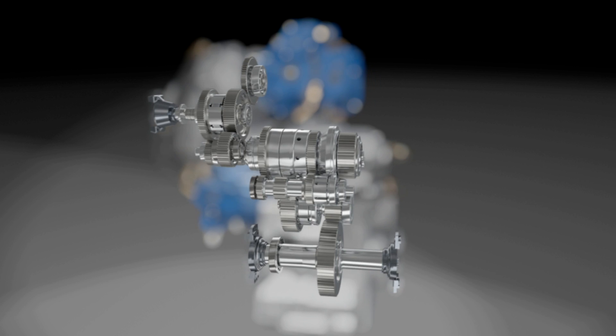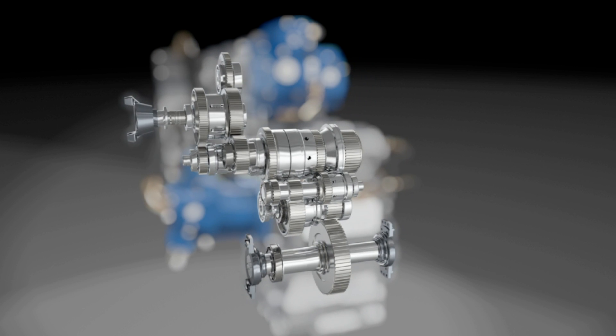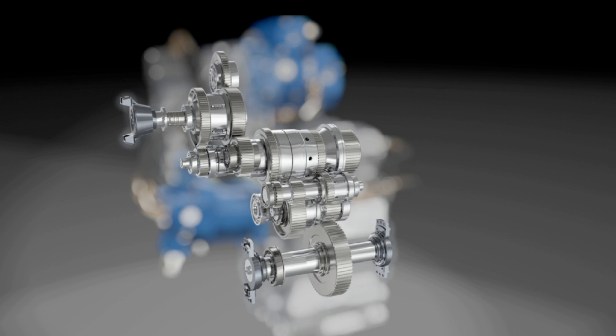A spur gear in the input area implements the power splitting. In the output area, a planetary gear accumulates the power.